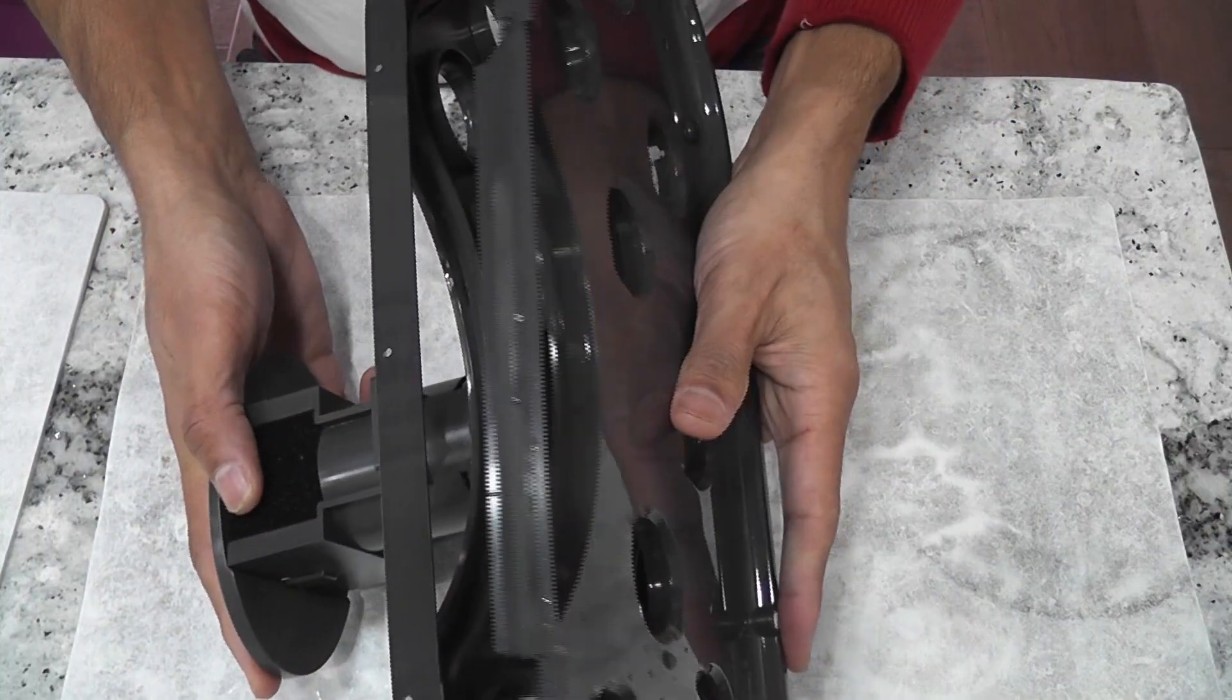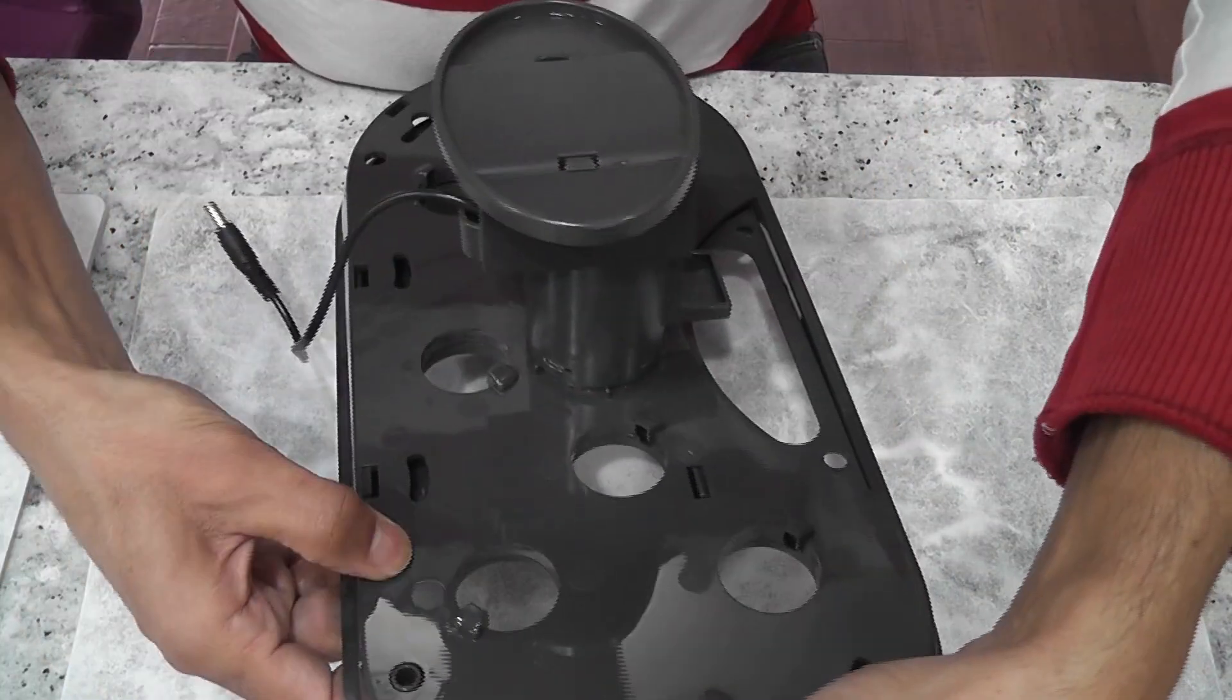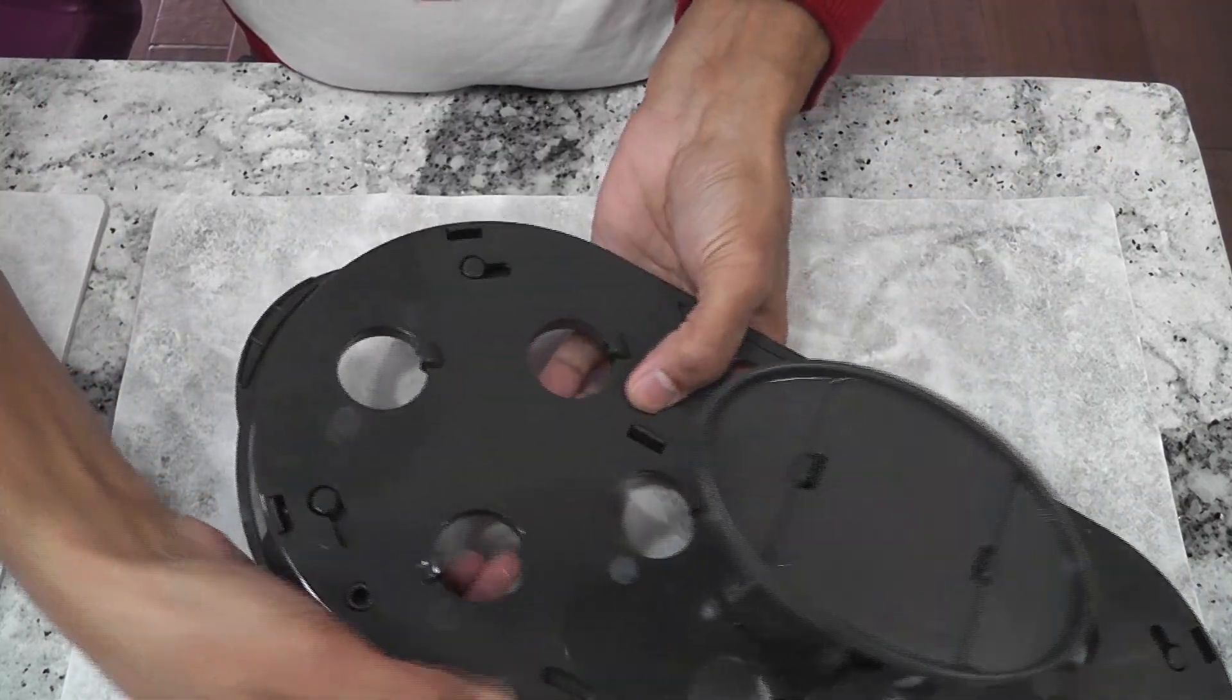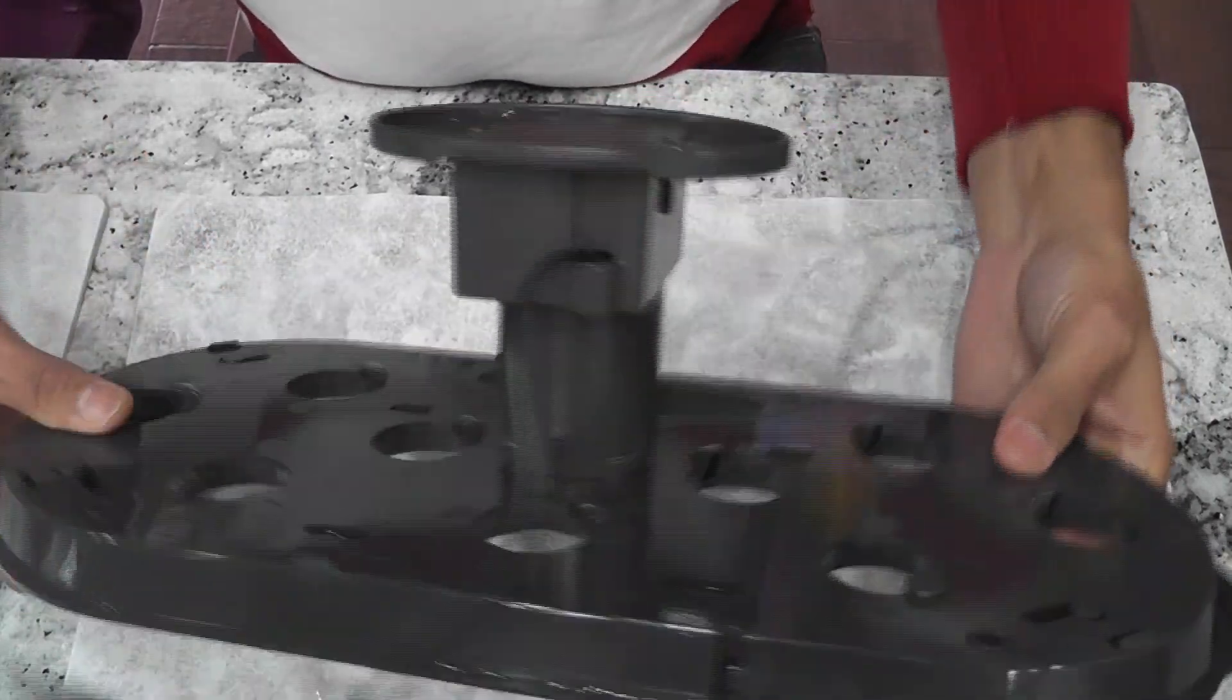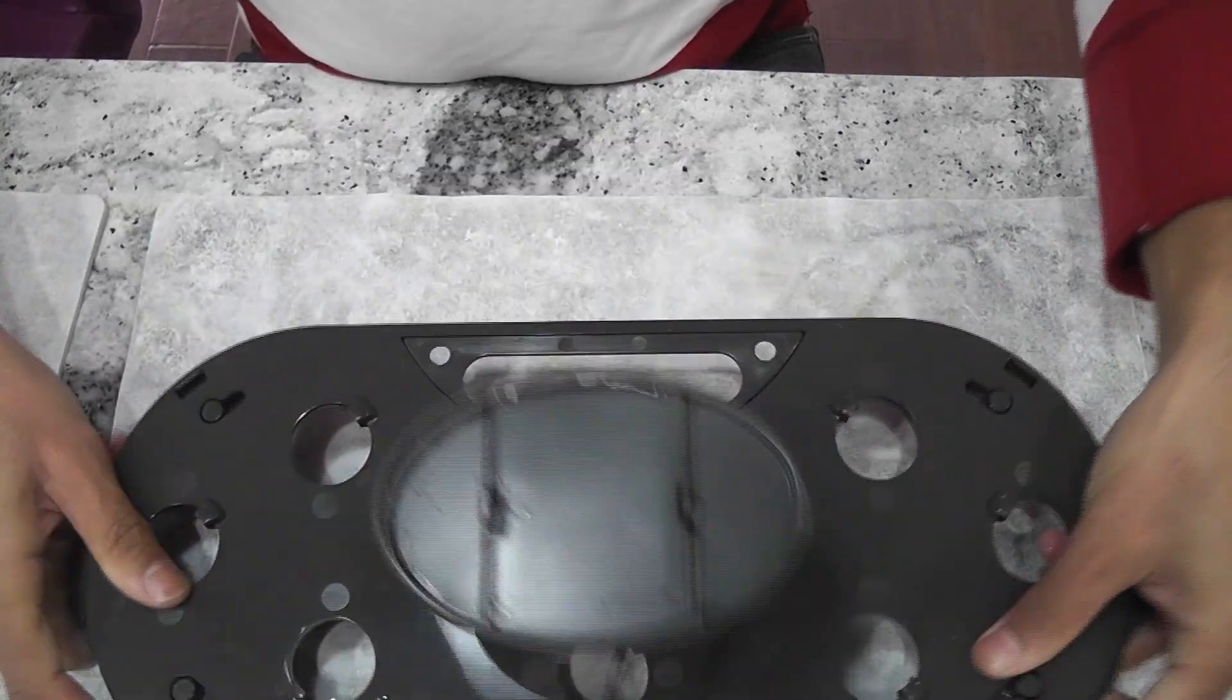Now align the grow deck parts and press them until all the tabs are locked. That's it. Hope this helps. Thanks for watching. Happy AeroGardening.